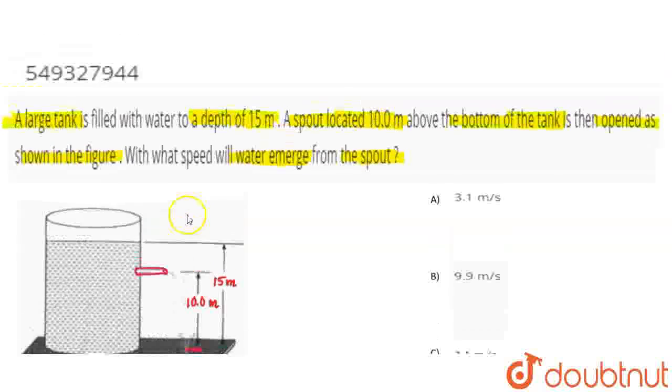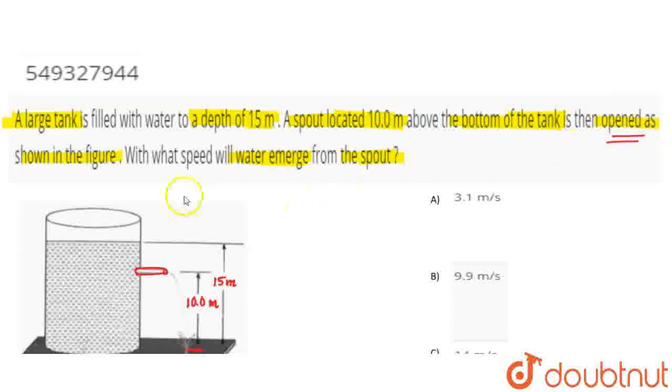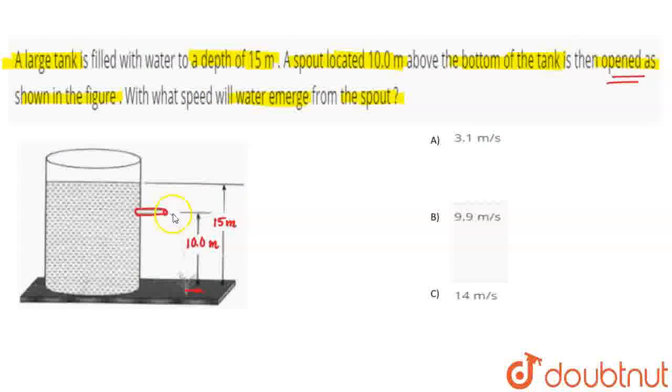Now it is opened. We have opened it. With what speed will the water emerge from the spout? From this point, how much speed will the water come out? So this is the section where water is coming out, which we'll call section 2. And the top surface of the water is section 1.